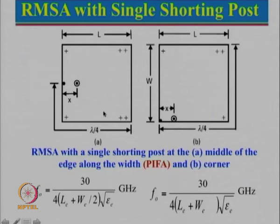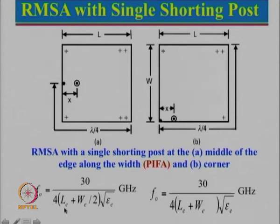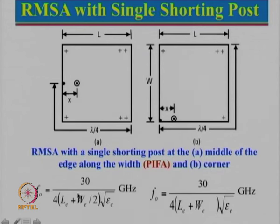We will mention some techniques to improve the efficiency, but first let us find out how to calculate the resonance frequency. This length is equal to lambda by 4. So f0 will be 30 divided by 4, where 30 corresponds to c which is 3×10^10 centimeters per second converted to GHz, and L_e and w_e are in centimeters. The lambda by 4 length is the effective length plus half of the w_effective. So that total length should be nothing but lambda by 4. The square root of epsilon_e comes in as before.